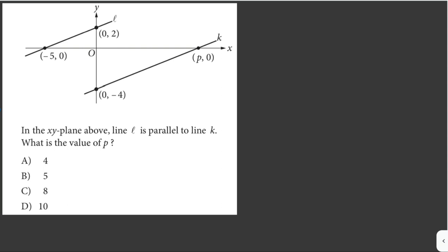Line L here passes through points negative 5, 0 and 0, 2. And we can solve for the slope of line L using the slope formula. So this is the slope formula: y sub 2 minus y sub 1 over x sub 2 minus x sub 1.